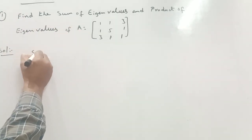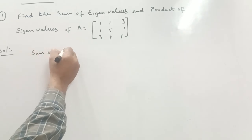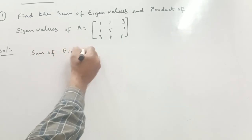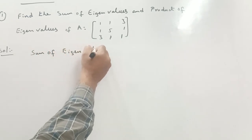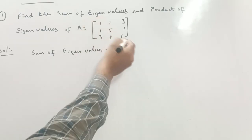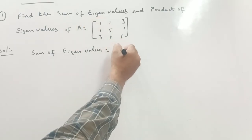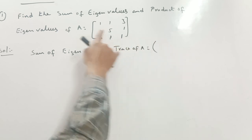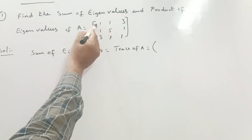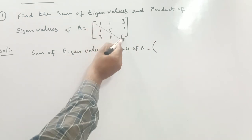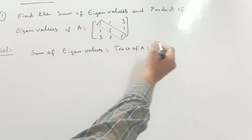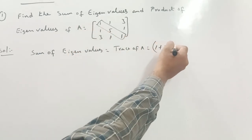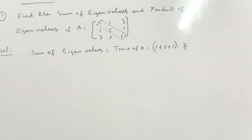Sum of eigenvalues is nothing but the trace of A — that is, you add the diagonal elements. So 1 plus 5 plus 1 is 7. The sum of eigenvalues is 7.